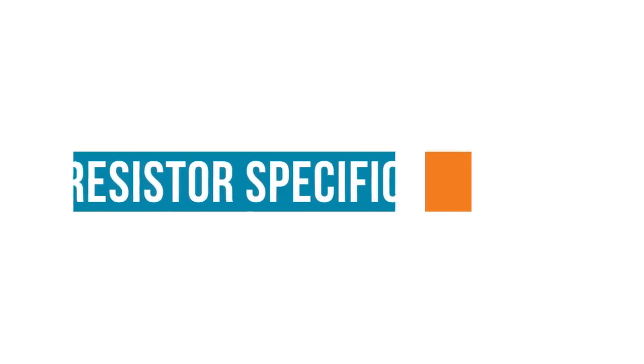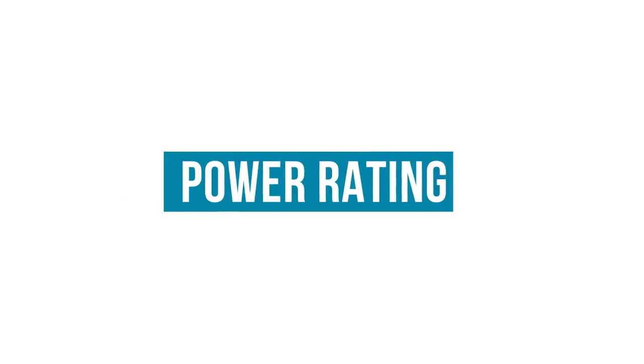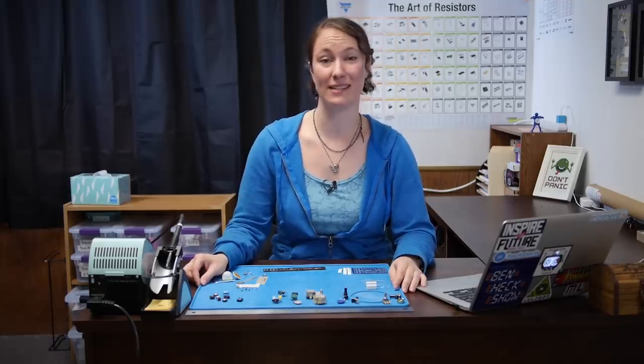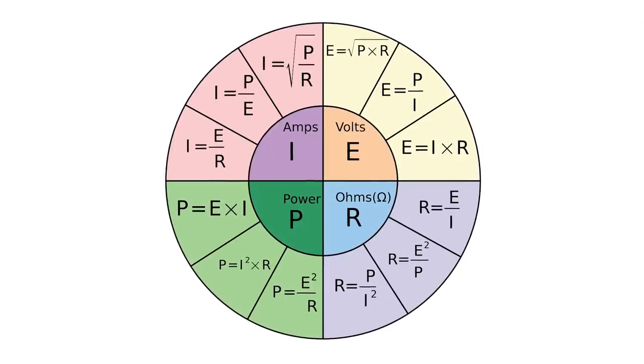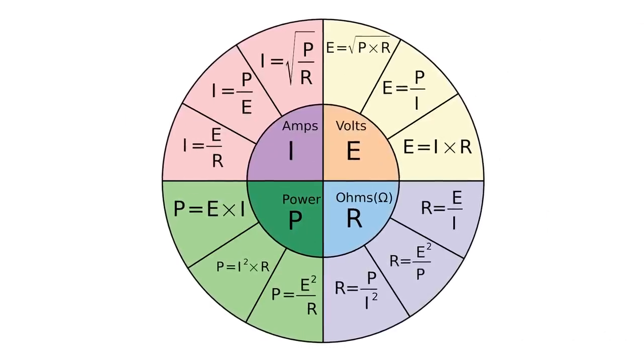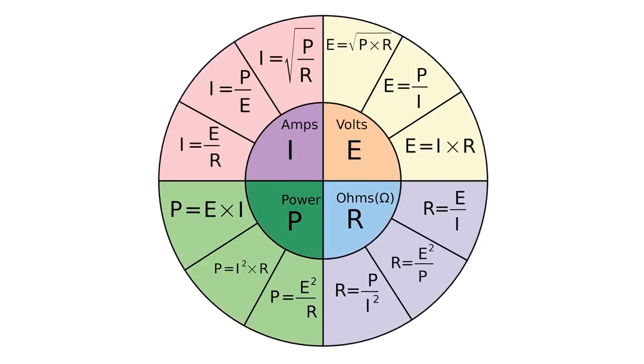When selecting resistors for your circuit, there are some characteristics you're going to want to consider. There's another unit we haven't talked about in terms of Ohm's Law. Power. Power is the rate at which energy is transformed into something else. It's calculated by multiplying the voltage difference across two points by the current running between them. It is measured in units of watts.